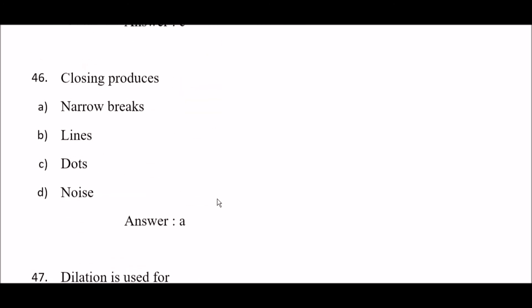Next question: closing produces — option A: narrow breaks, option B: lines, option C: thoughts, option D: noise. The right answer is option A — narrow breaks.